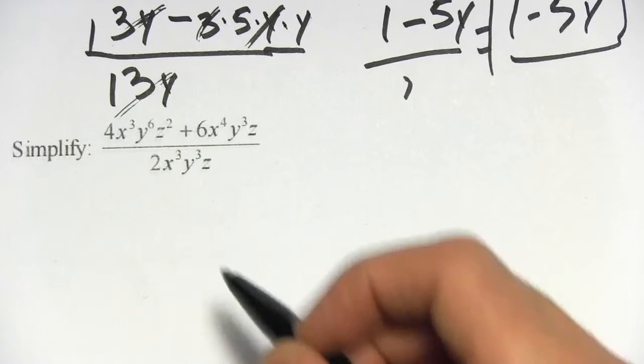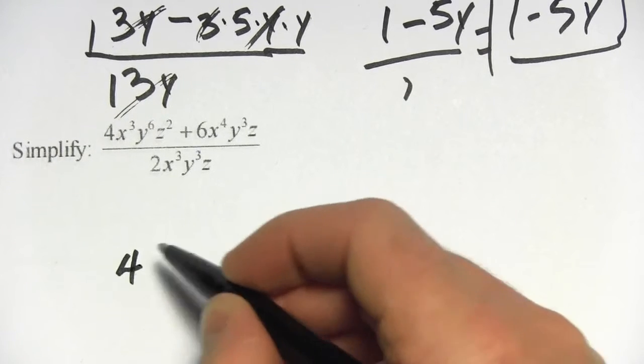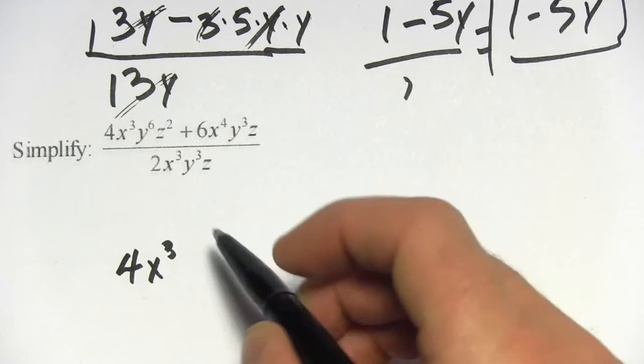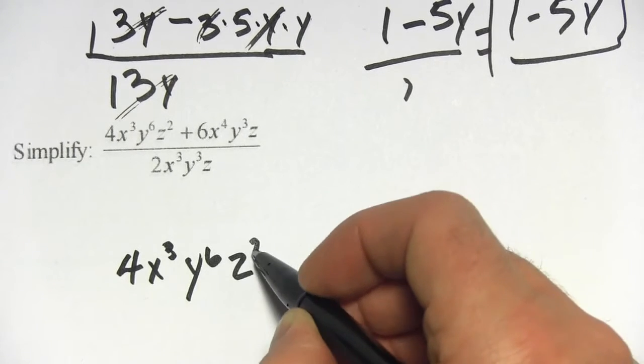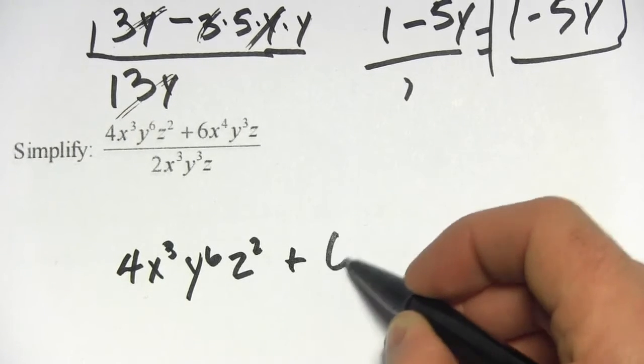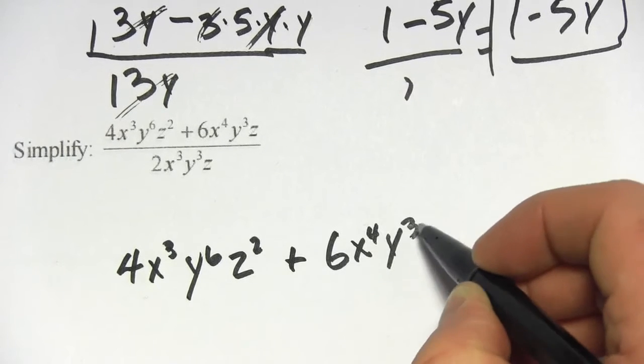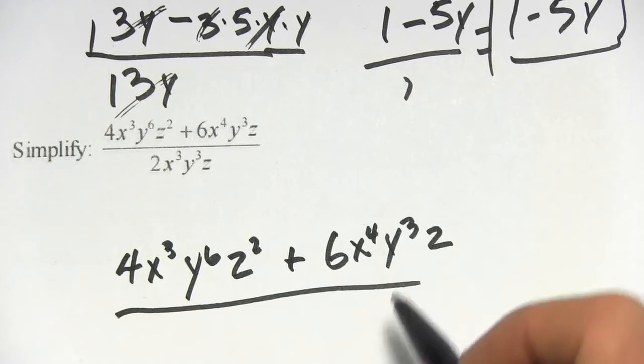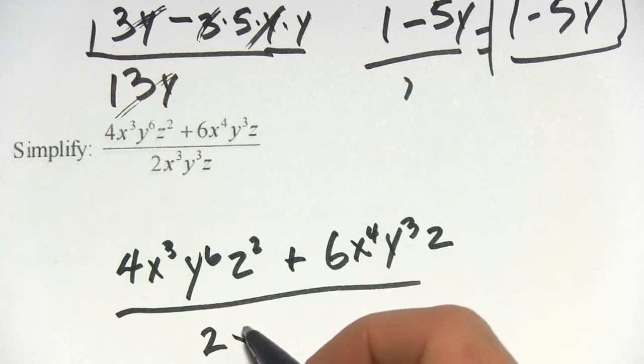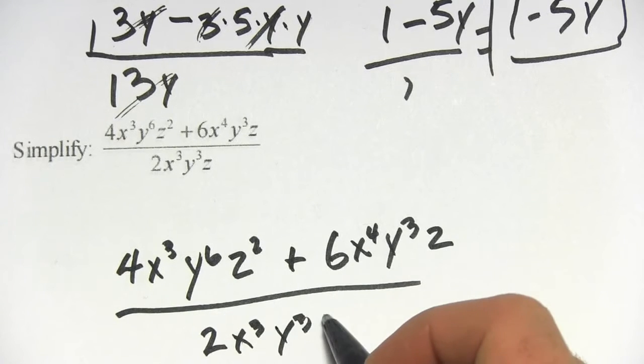Actually I'm going to rewrite this a little bit bigger so we have some more room. So here's 4x cubed, y to the 6th, z squared, plus 6x to the 4th, y to the 3rd, z and then our bottom term here, 2x to the 3rd, y to the 3rd, z.